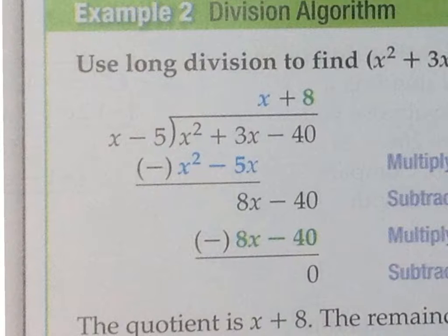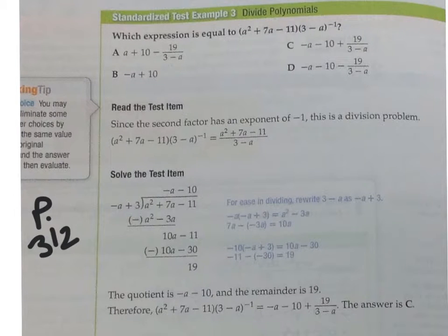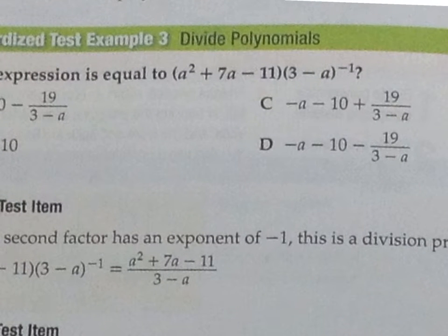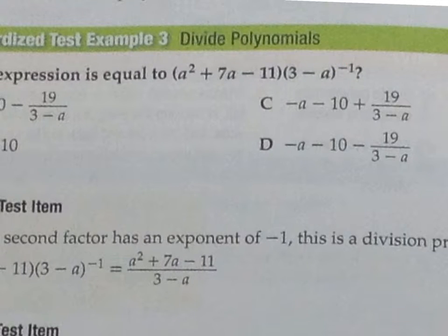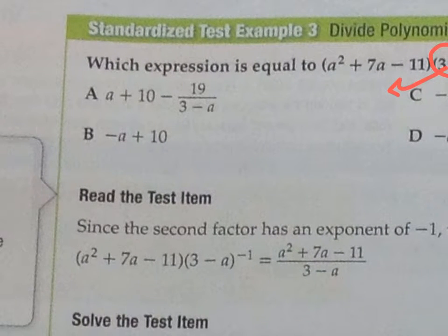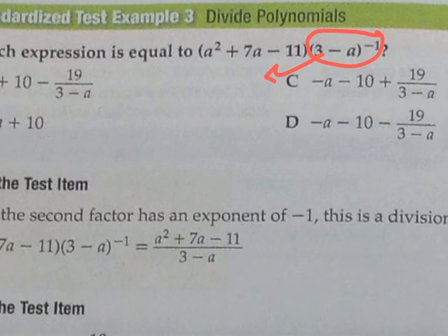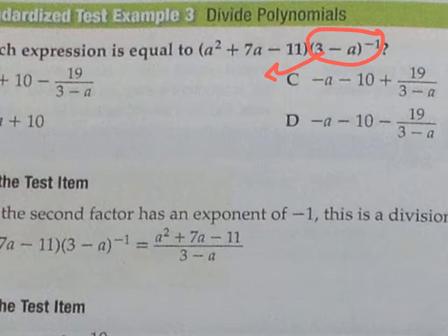Let's jump to page 312. On page 312, we have example 3. We already talked about this type of problem — it's the same thing. You have a polynomial times a binomial to the negative 1 power. A binomial to the negative 1 power means you take that binomial and move it underneath, making it positive, which ends up being a division problem. So what you really have is a squared plus 7a minus 11 divided by 3 minus a.